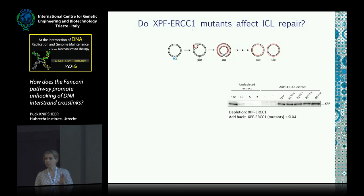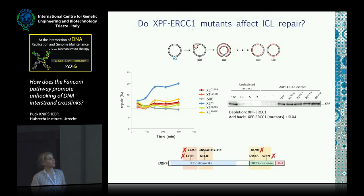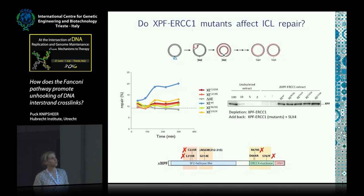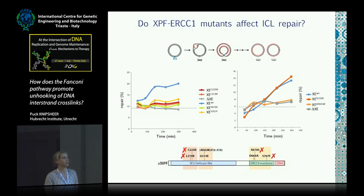The next question was whether these mutants actually inhibit ICL repair. We use the regeneration of an SAP1 restriction site as a readout. We chose mutations in the N-terminal part of the helicase-like domain and in the nuclease domain, and mutating all of these residues caused a defect in interstrand crosslink repair. We deplete endogenous XPF ERCC1 and add back these mutants together with wild-type SLX4. For the two mutants expected to interfere with SLX4 interaction, the point mutant nicely rescues repair, while deletion of the larger loop completely abrogates repair, indicating it is important for the repair process.